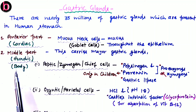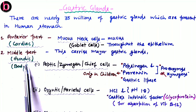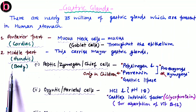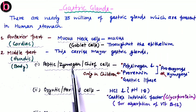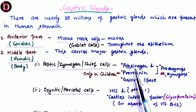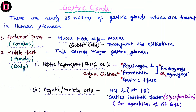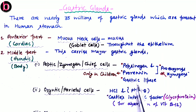The second part is the middle part, which is subdivided into fundic and body regions. The body carries the maximum number of gastric glands and four types of cells. The first are peptic, zymogen, or chief cells, which secrete pepsinogen and prorenin. Pepsinogen is also known as propepsin. Both are inactive enzymes that are activated by HCl secreted by parietal cells. Chief cells also secrete gastric lipase, which is related to lipid digestion.